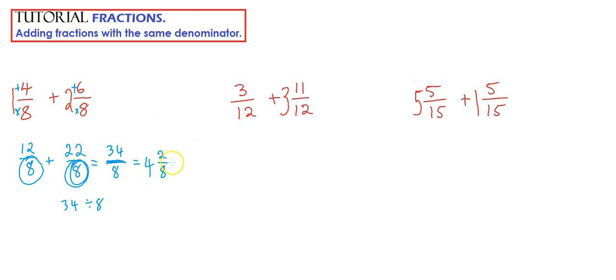Now, here we've got 2 eighths, and we can simplify that. So we should be going 4 divided by 2, divided by 2, 2 divided by 2 is 1, 8 divided by 2 is 4. So the final answer is 4 and a quarter.